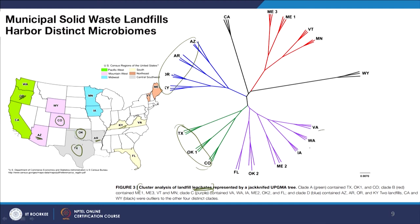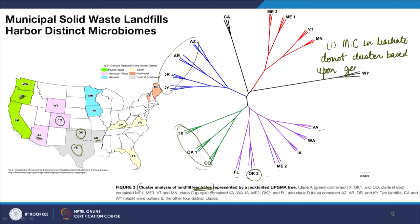The key message is that microbial communities in leachate do not cluster based on geographical proximity. There are other factors that determine which leachate samples will be similar to each other.